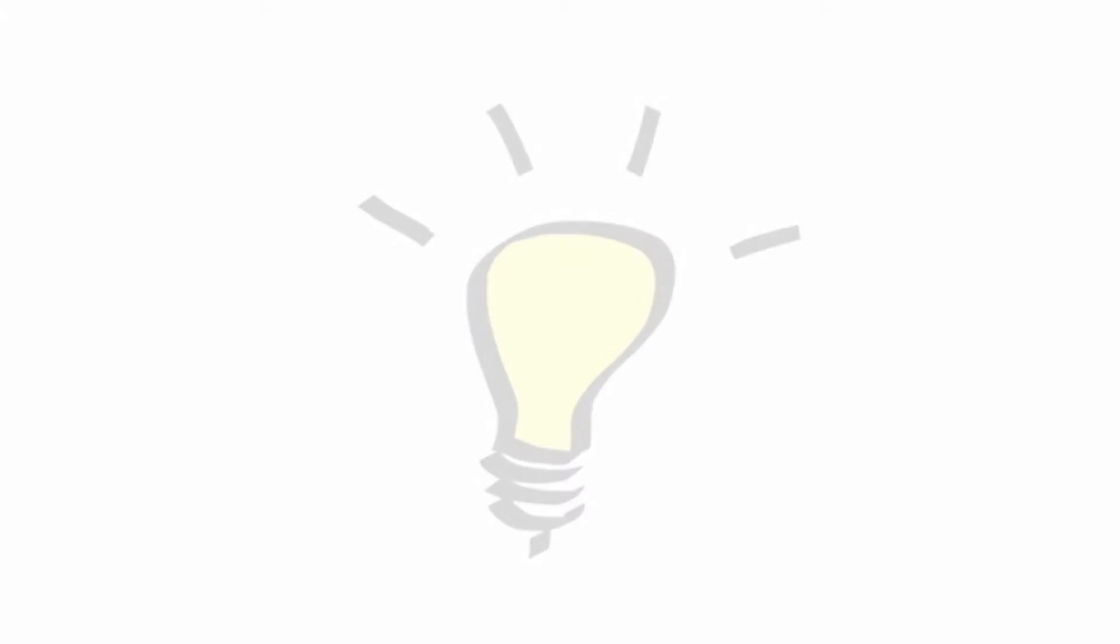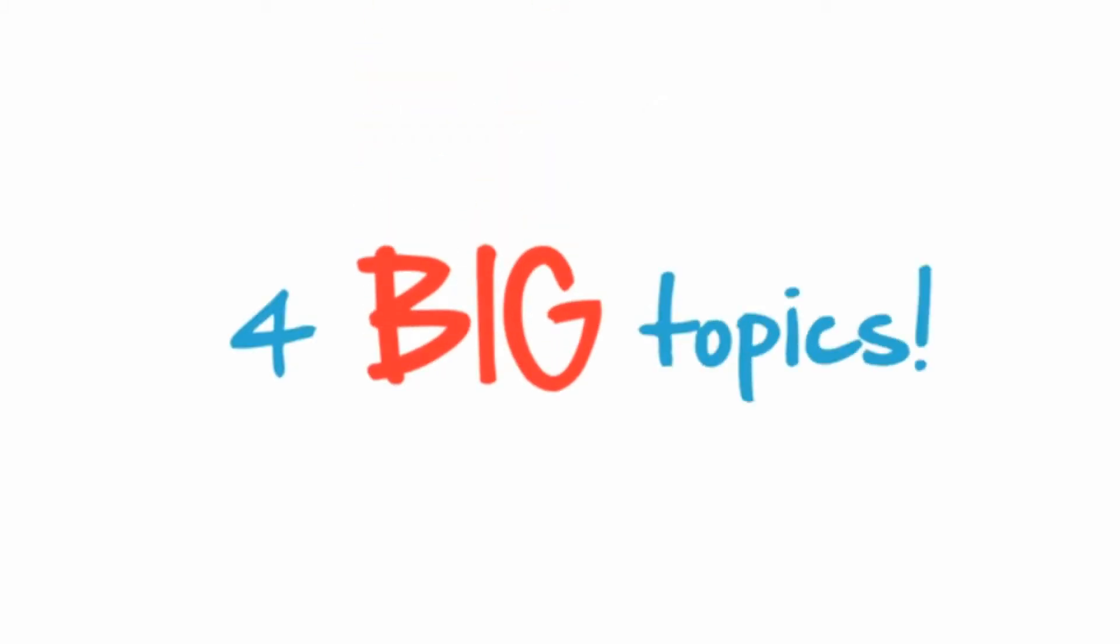Today we're going to use a mind map to plan our story. This way we can organize our thoughts and develop our ideas more successfully. The story plot develops around four big topics.